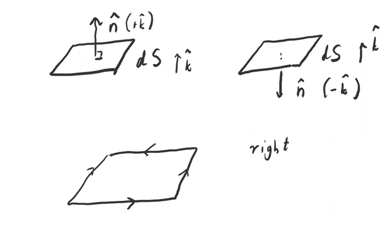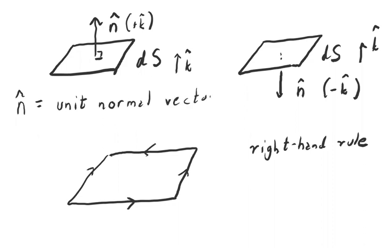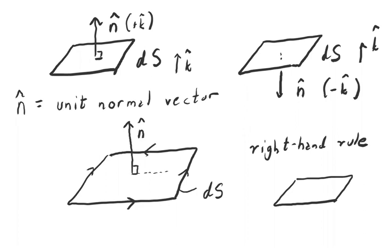I'll go back to something we've seen many times in this course — the right-hand rule. The right-hand rule allows me to determine the direction of the unit normal vector n-hat. If you look at the boundary of the differential surface element and the directions defined along the boundary surface follow the right-hand rule, we use that convention to define n-hat accordingly — normal to any line that's part of the plane containing dS.